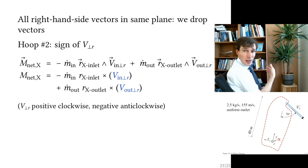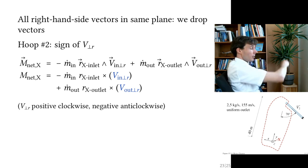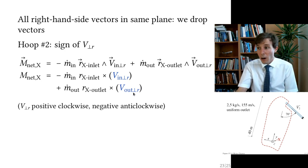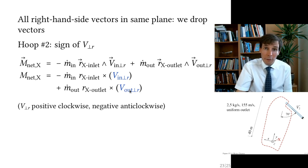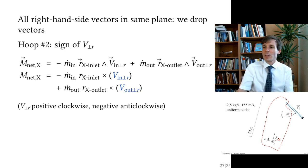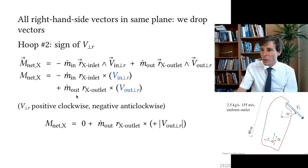The component of v₂ perpendicular to the radius from point X to the outlet is therefore positive. The inlet term is zero — we carried it through the math for completeness. For the outlet term, we insert the mass flow rate, the outlet radius, and the perpendicular component of v_out.